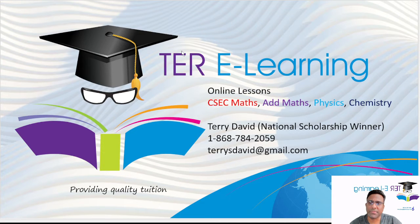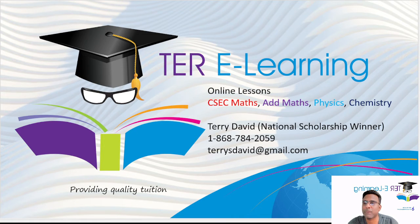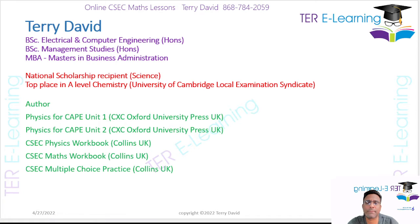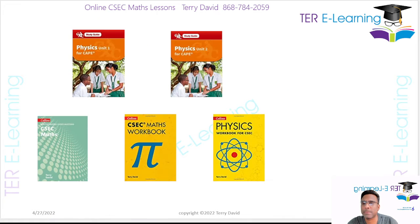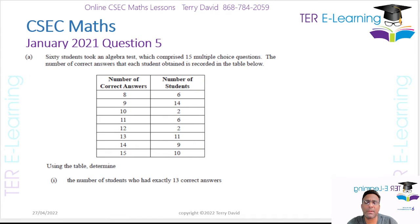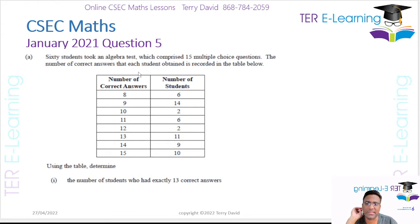Hi guys, so in this video I'm going to be going through the solutions to question 5 in the January 2021 paper. So in question 5, we have 60 students who took an algebra test which comprised of 15 multiple choice questions. The number of correct answers that each student obtained is recorded in the table.